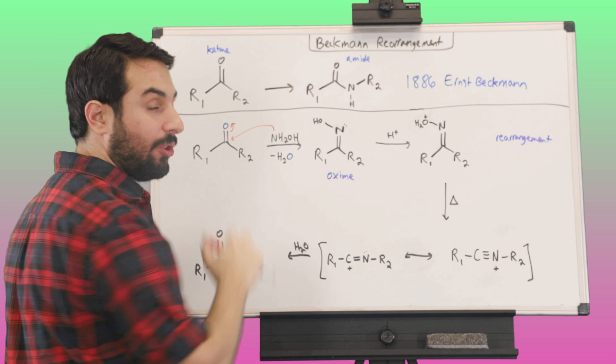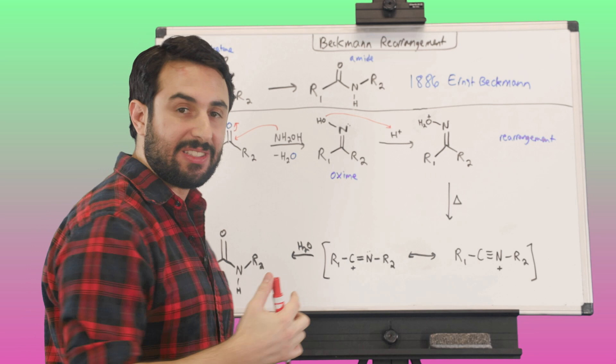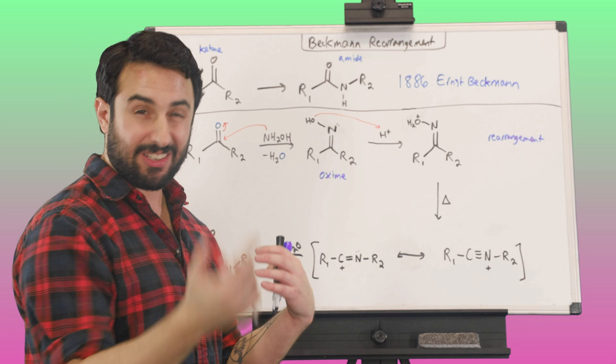That's what that functional group is called, is an oxime. And now what can happen is, there's a couple of ways to do this. A very simple way is to just protonate it. We can be doing this in acidic conditions. We can also turn this hydroxyl into some kind of leaving group derivative, like a sulfonate or something like that.